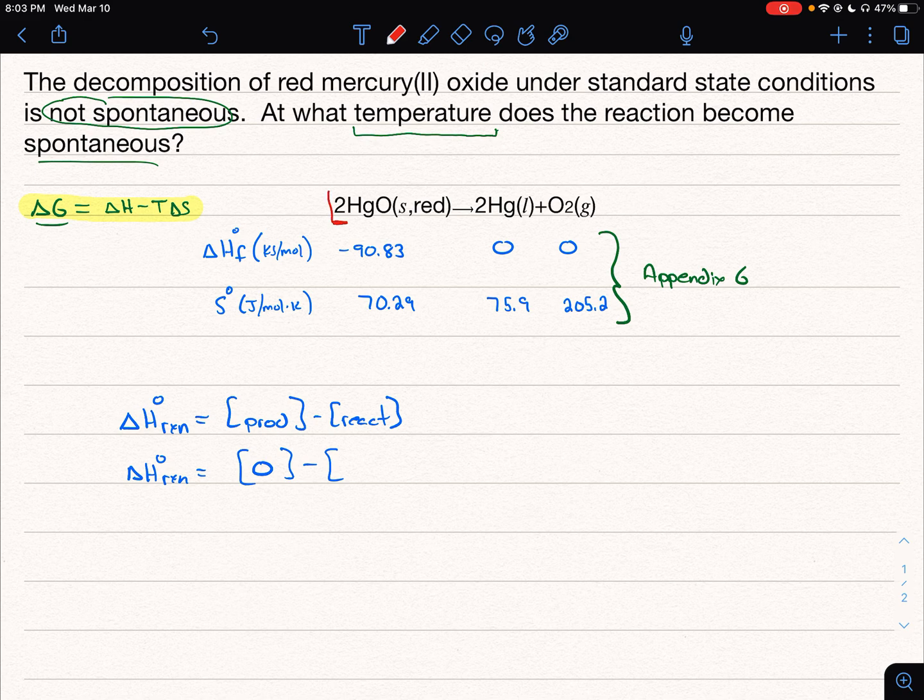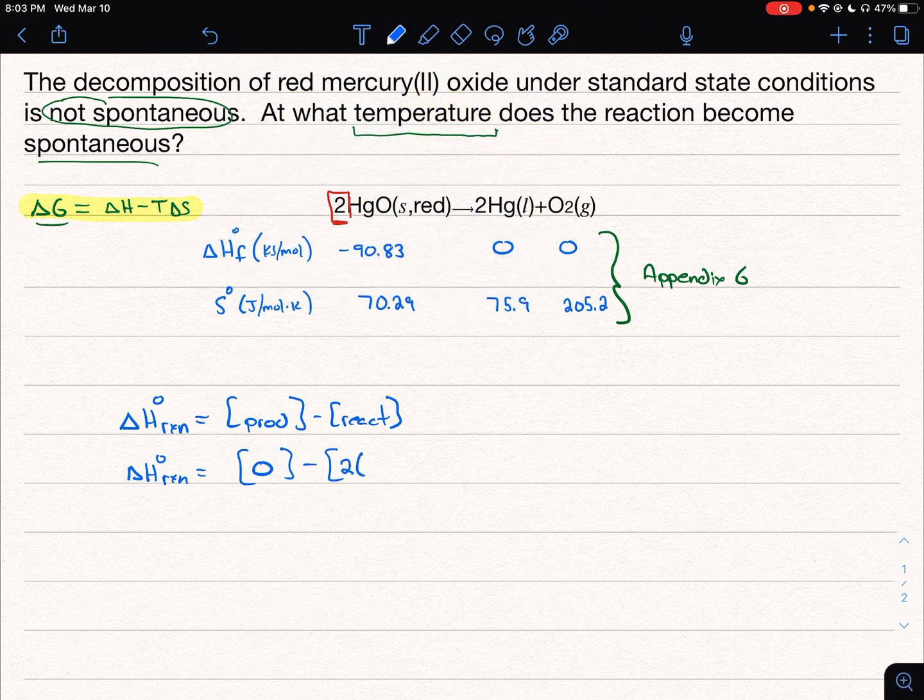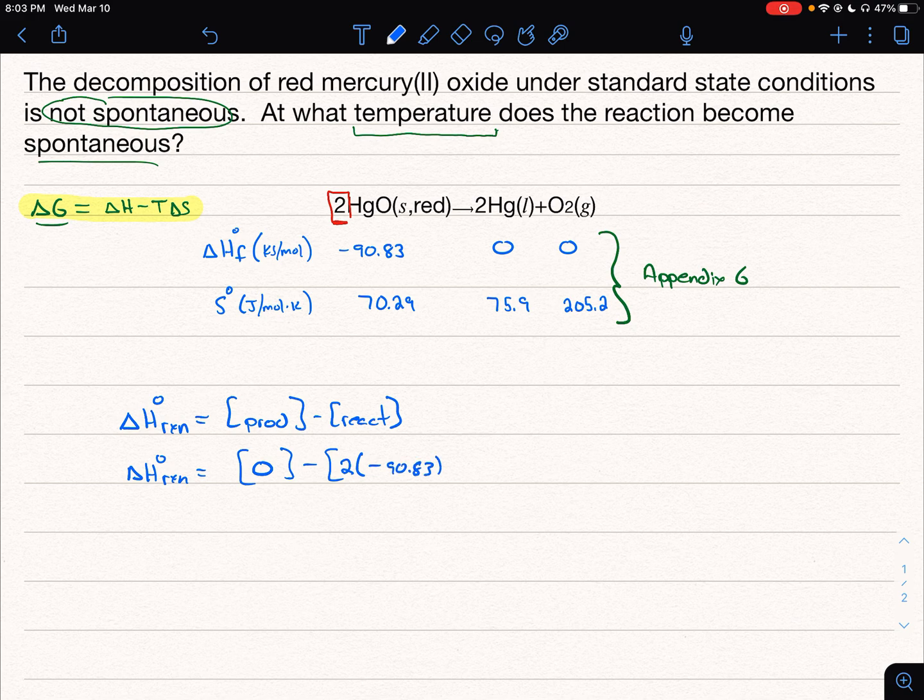Because of this 2 here, we have to do 2 times negative 90.83. And so we're going to get our delta H of reaction being now a positive 181.66, put my units back in, kilojoules per mole. So now we have delta H.